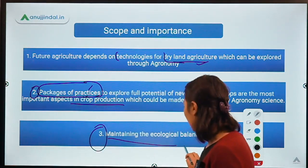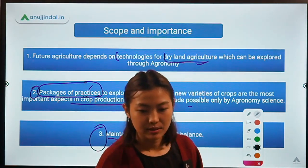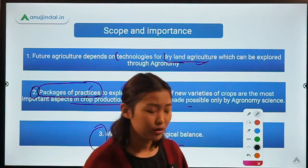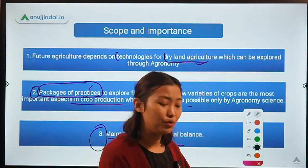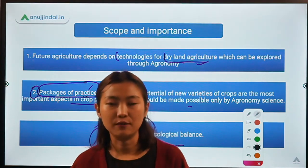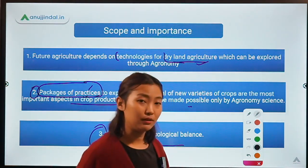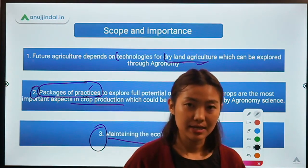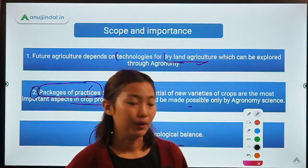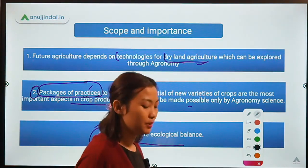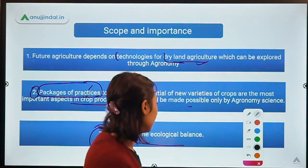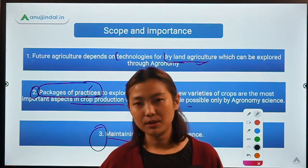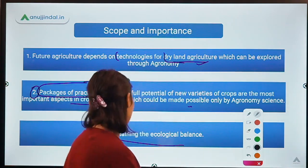The third point is to maintain the ecological balance. When we're talking about ecological balance, it will also be trying to use all the natural resources available in that particular farm — for example, soil, fertilizers, water, and sunlight — maintained in a proper, holistic, and harmonious way to get more production with minimum input.